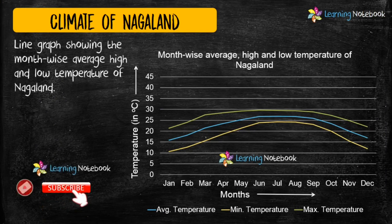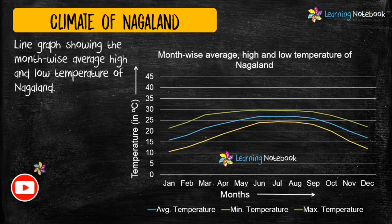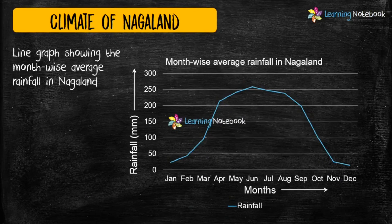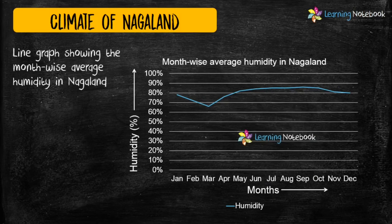Students, you can show month-wise average high and low temperature of Nagaland using a line graph. In the same way, you can depict month-wise average rainfall in Nagaland again by using a line graph. And then, you can represent month-wise average humidity in Nagaland as shown here.